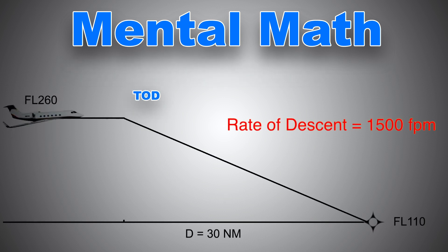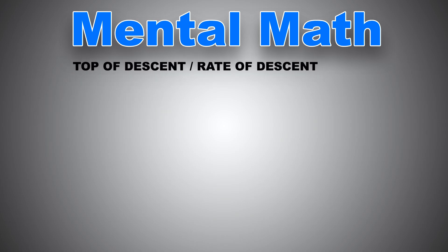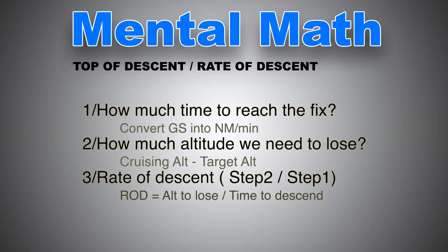Now let's do a quick recap. In order to meet a crossing restriction, all you need to do in real life is use the VNF function in your FMS or G1000 and it will do it for you. However, we still need to monitor what the autopilot is doing. To do that, you need the three steps we have just covered. First, how much time to reach the fix. You need to convert your ground speed into nautical miles per minute and then the distance will be on your flight plan or G1000. Then divide the distance by the ground speed and you get the time. Secondly, how much altitude we need to lose, which is current altitude divided by crossing altitude. Lastly, divide the altitude you need to lose by the time required to reach the fix and you get your rate of descent.